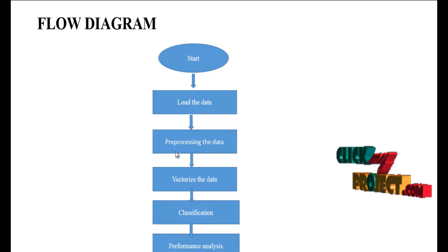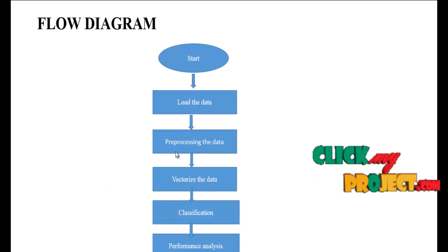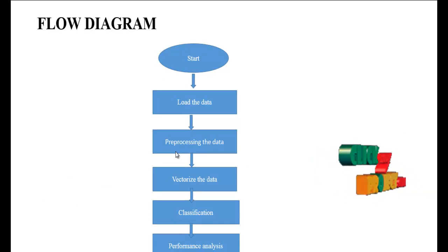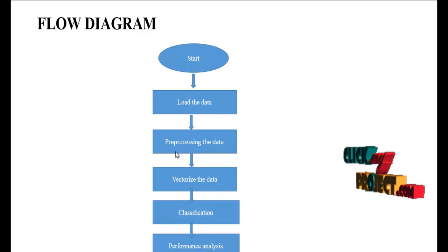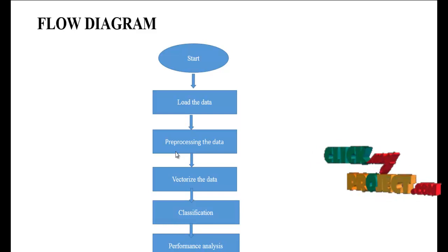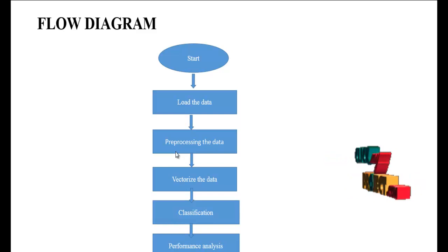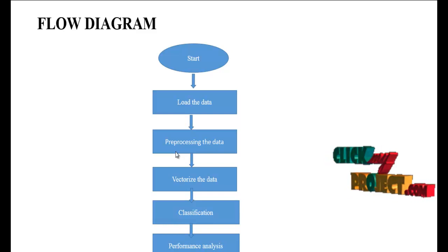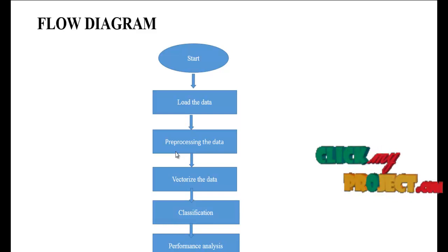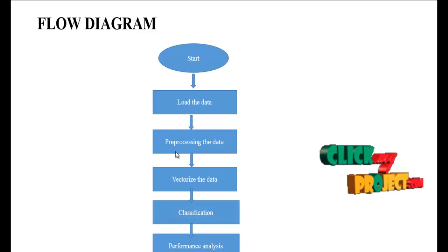Now we are going to see the flow of our process. First, we load the dataset. The dataset contains the post and type columns. The type is based on the post — such as happy or sad mode — and also contains categories.